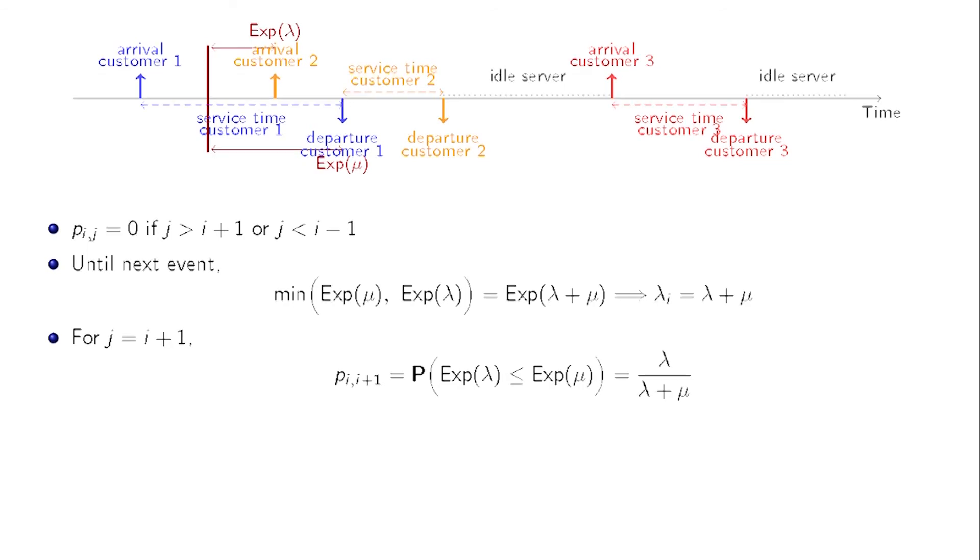The process jumps from i to i+1 if the arrival happens before the departure. In other words, if an exponential random variable of parameter lambda is smaller than an exponential random variable of parameter mu. Again, we know that the probability of this event is lambda over lambda plus mu. So, p_{i,i+1} equals lambda over lambda plus mu.